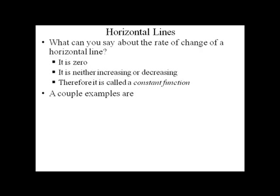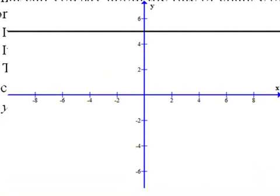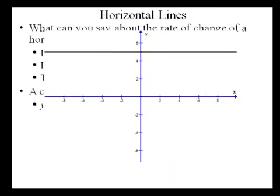So let's look at some examples of horizontal lines. y equals 5 would be an example. This would be a function that has all y values of 5 associated with a variety of different x values. Graphically, it would look like this: a horizontal line that goes through the y axis at 5.